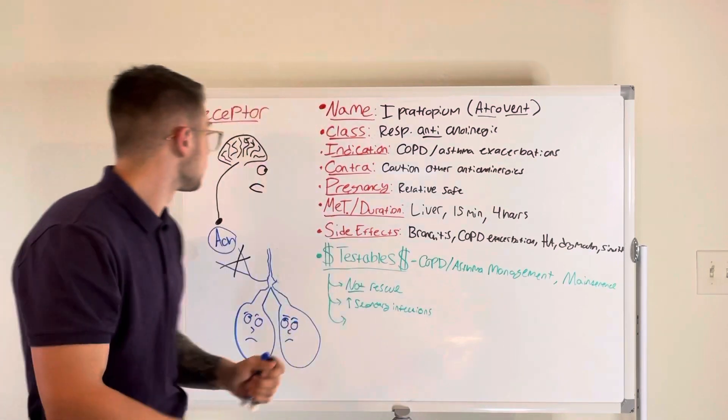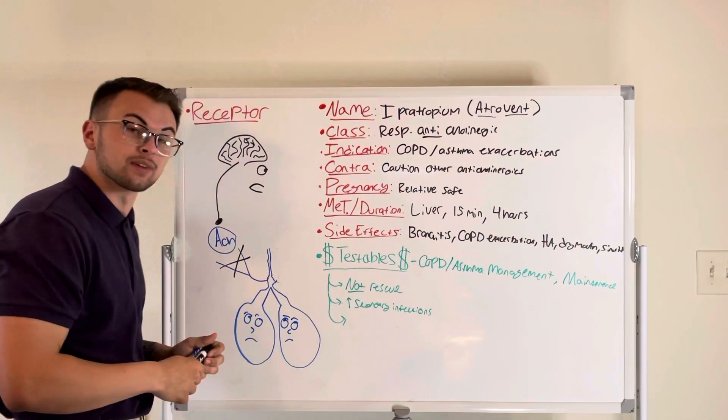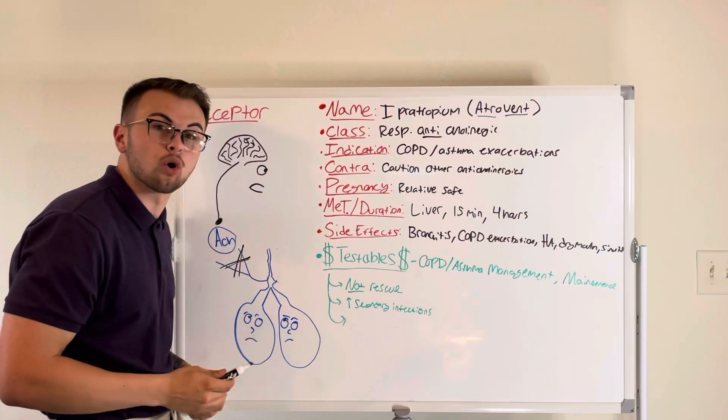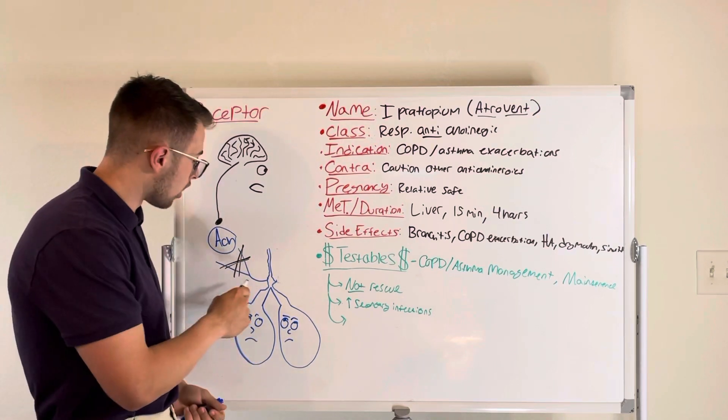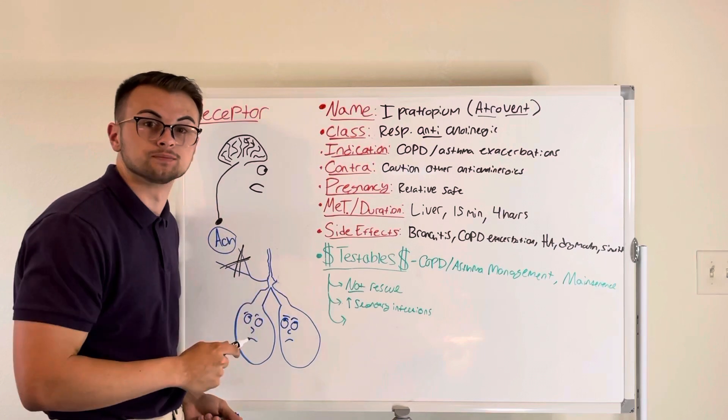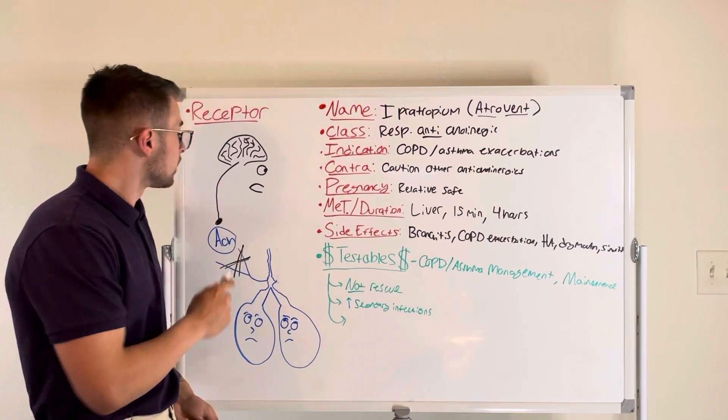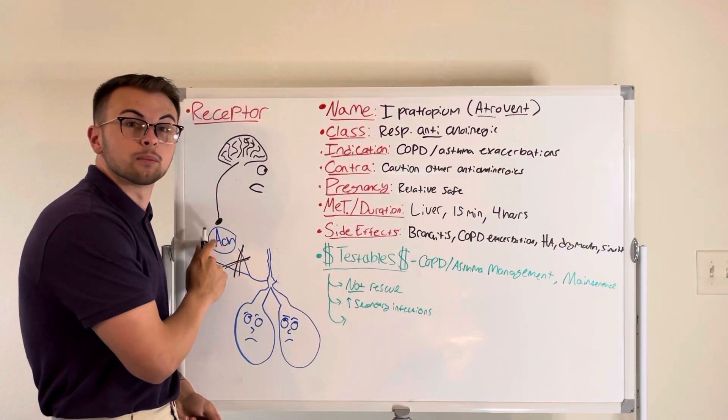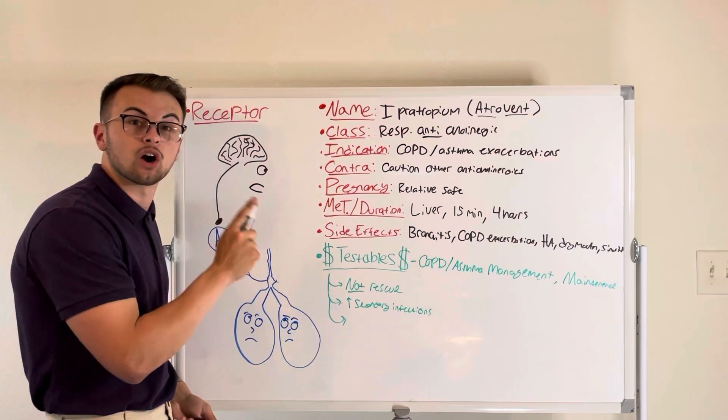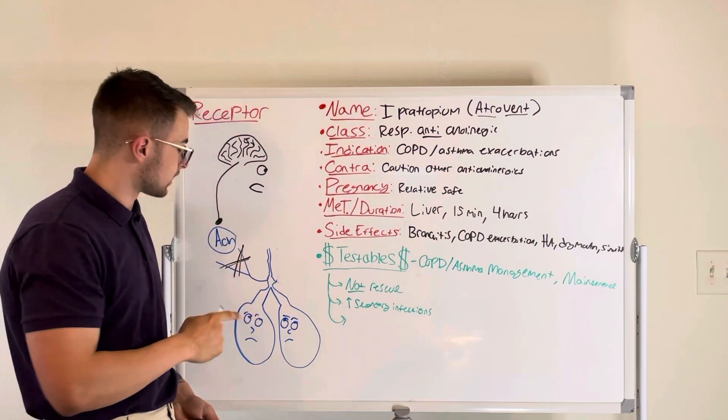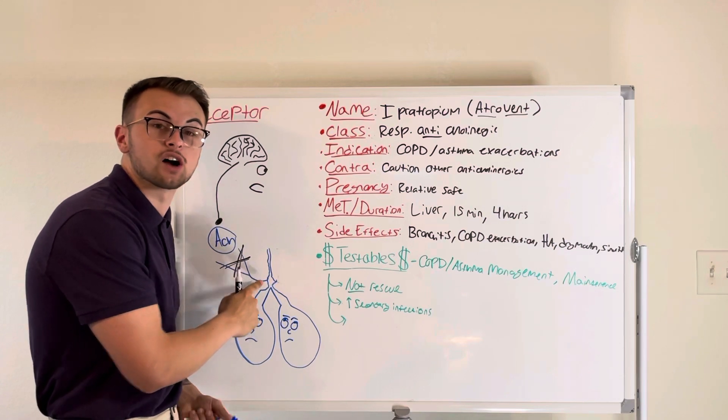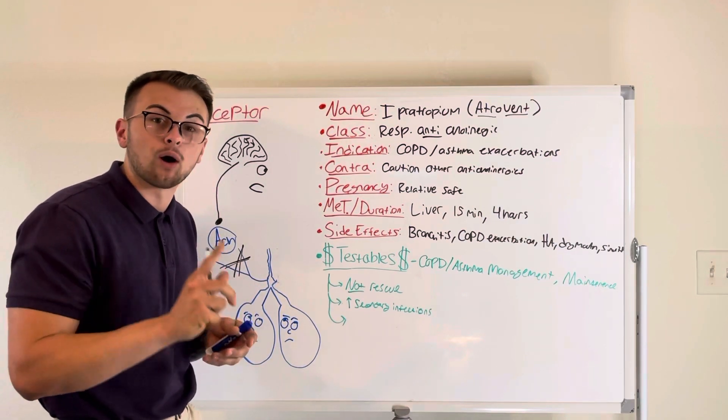This drug binds to and blocks our acetylcholine receptors on our bronchial smooth muscle. Normally, acetylcholine from the vagus nerve causes an increase in calcium into bronchiolar smooth muscle and causes constriction.